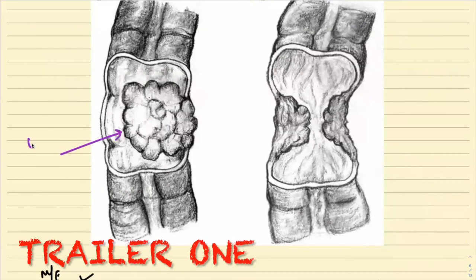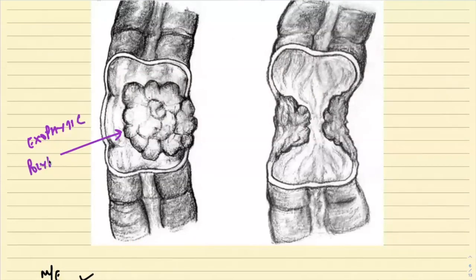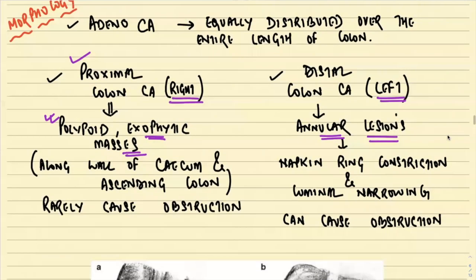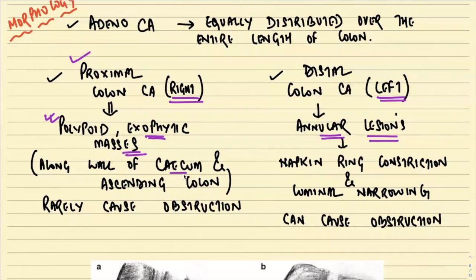Can you appreciate this exophytic polypoid tumor mass? This is presenting as an exophytic polypoid tumor mass. On the other side, it is presenting as a constricted annular lesion, as you can appreciate from this particular diagram. The exophytic polypoid mass, as we see here, is growing along the wall of the cecum and the ascending colon, and they rarely cause obstruction.